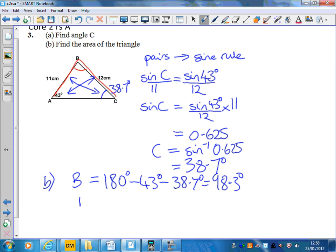So now we can use our formula for the area. The area is a half, and in this case I've got sides A and C, so half A C sine B. I'm going to put in the relevant information.